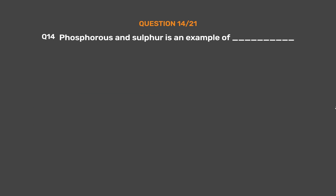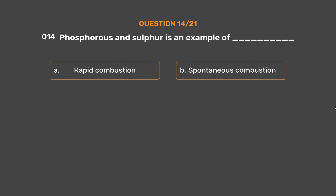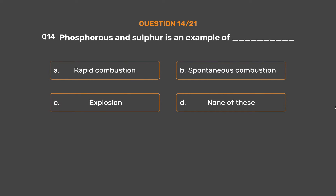Question number 14: Phosphorus and sulfur are examples of _____. Option A: Rapid combustion. Option B: Spontaneous combustion. Option C: Explosion. Option D: None of these.